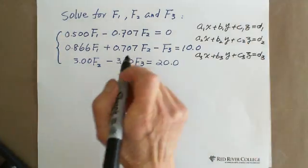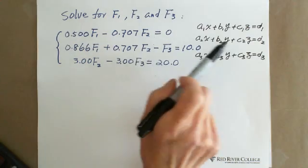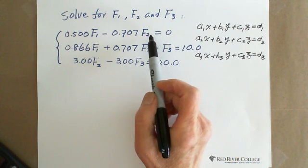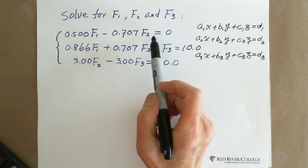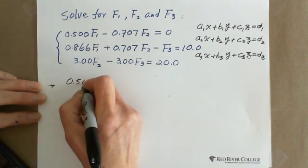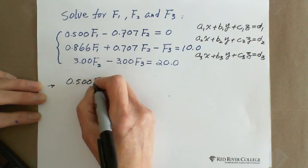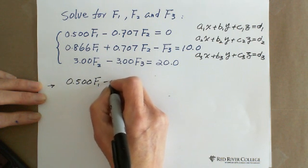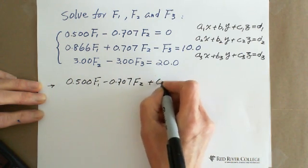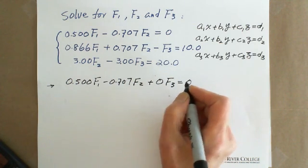We need a little bit change in this equation. Because in the first equation, you can see you have F1, have F2, no F3. That's why actually the coefficient of the third one equals zero. So you need to write this way: 0.500F1 minus 0.707F2 plus zero F3 equals zero. This is the first equation.